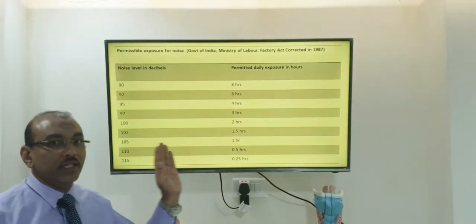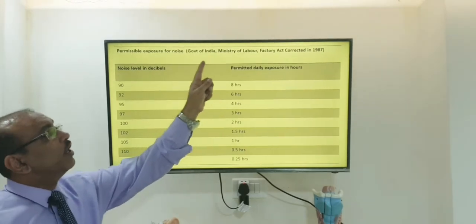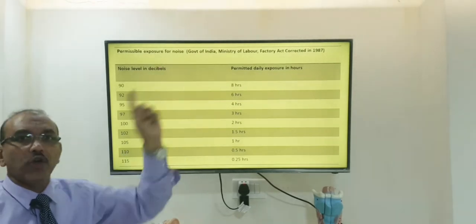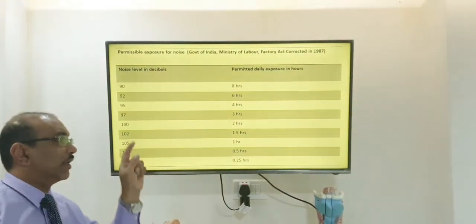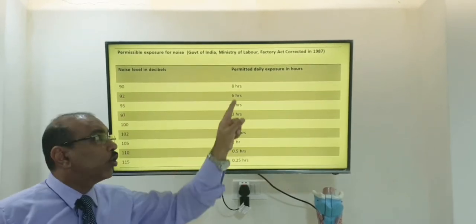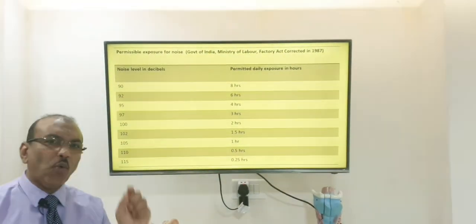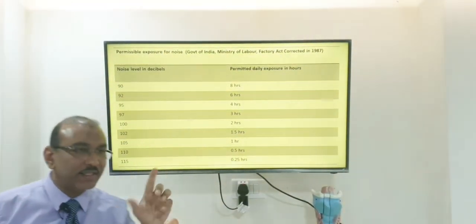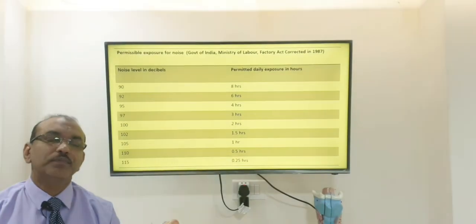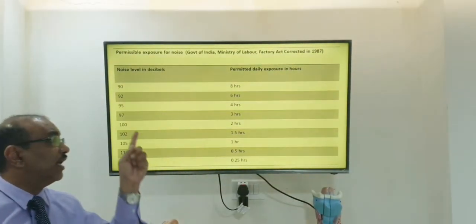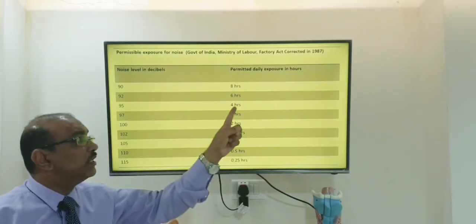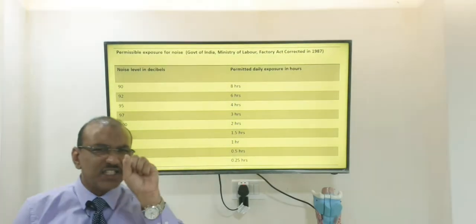This chart from the Government of India, Ministry of Labour, shows permissible noise exposure limits. When a labourer is exposed to 90 decibels, they are allowed to work for only eight hours. When the sound increases by just five decibels — from 90 to 95 — the working hours drop from eight to four. At 100 decibels, working hours drop further to just two hours. Just five decibels makes a significant difference.